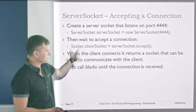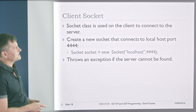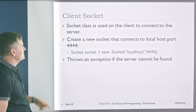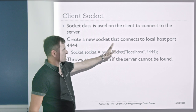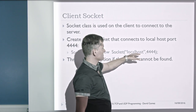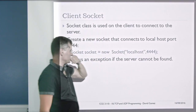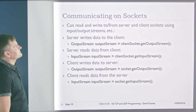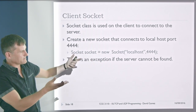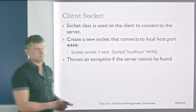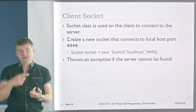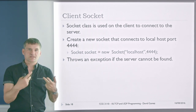On the server side we've got our socket and we can talk to the client. On the client side, we create a regular socket — not a server socket, just a Socket. We create a new socket linked to a particular address, which can be localhost or an IP address. As long as the server exists, it will connect to the server and we'll have a socket. So we've got our client socket on the server side and a socket on the client side, and these two sockets can now communicate.